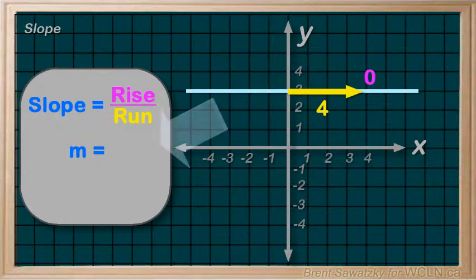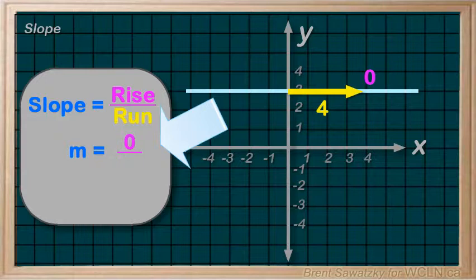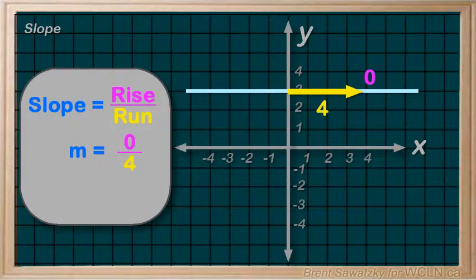So the slope would be rise over run. The rise was 0, and the run, well, it could have been anything, but we chose 4. We remember that 0 divided by anything, including 4, is still 0. So the slope for a horizontal line is 0.